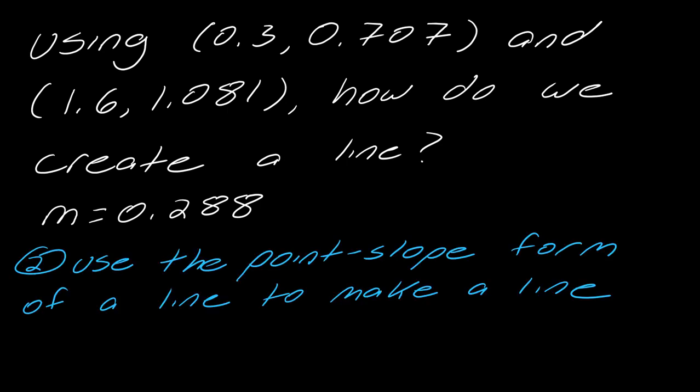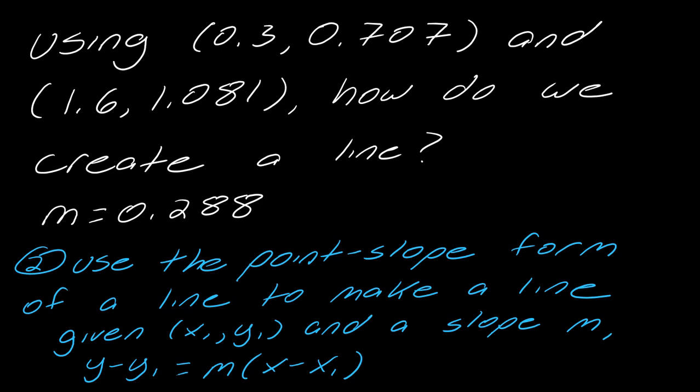So now moving on, now we want to use the point slope form of a line to actually make a line and so what is that formula? Again I'll remind you. So if you have some point x1y1 and then you have your slope m, this would be the point slope form of a line. So it's y minus y1 equals m times x minus x1. So basically whatever this point is you're going to fill it in to these two parts of the equation.